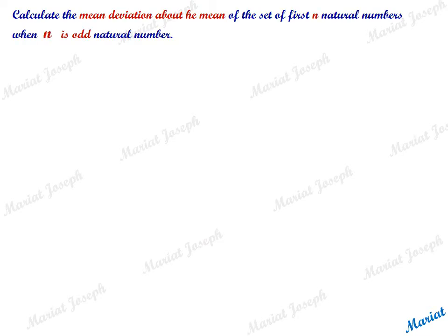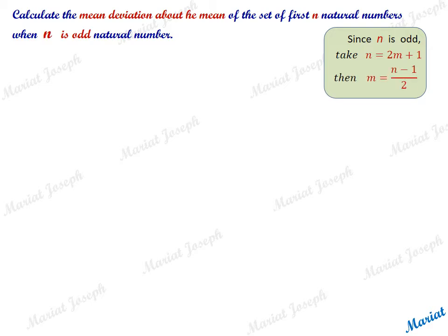Calculate the mean deviation about the mean of the set of first n natural numbers when n is an odd natural number. Since n is odd, take n equal to 2m plus 1, where m is an integer. Then m is equal to (n minus 1) by 2.